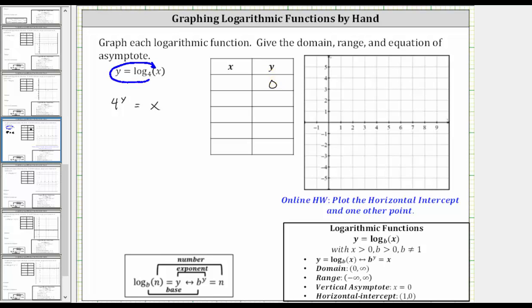So when y is equal to zero, x is equal to four raised to the power of zero, and four raised to the power of zero is equal to one. So this gives us the ordered pair one comma zero, which is the horizontal intercept.